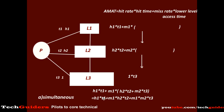Distributing it, we get: H1·T1 + M1·H2·T2 + M1·M2·1·T3. We can interpret this as: hit rate × T1, plus a miss at L1 and hit at L2 × T2, plus a miss at L1 and miss at L2 × hit rate 1 × T3. This is the case of simultaneous access.